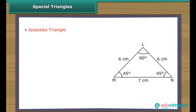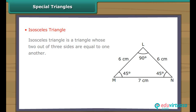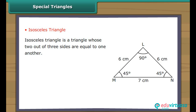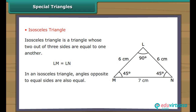Isosceles Triangle. An isosceles triangle is a triangle whose two out of three sides are equal to one another. In triangle LMN, LM equals LN. In an isosceles triangle, the angles opposite to the equal sides are also equal. In triangle LMN, angle LMN equals angle LNM.